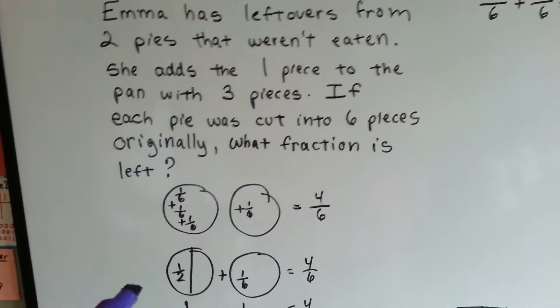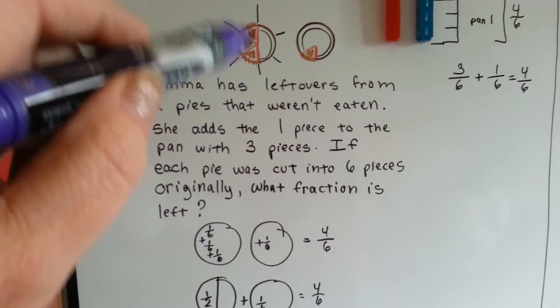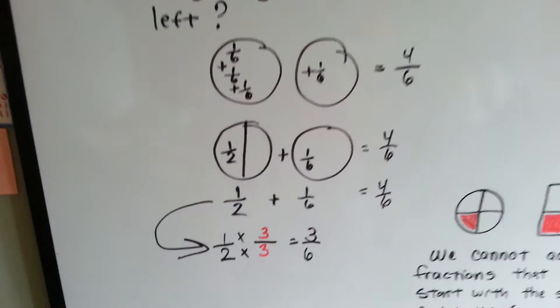How can this be 1 half plus 1 sixth gives us 4 sixths? Well, when you look at the pie, there's a half of the pie in here. 3 sixths is equal to 1 half. So, here's what we do.